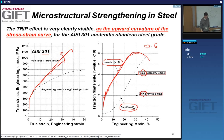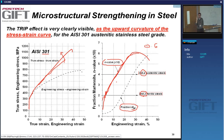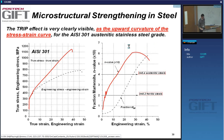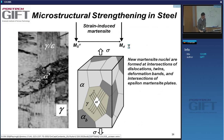The TRIP effect gives a very large increase in both strength and plasticity. The reason is the strain hardening, which itself comes from this multi-phase microstructure adding more capacity of the material to store dislocations. Just a few words about the strain-induced martensite.